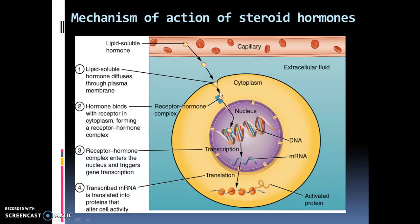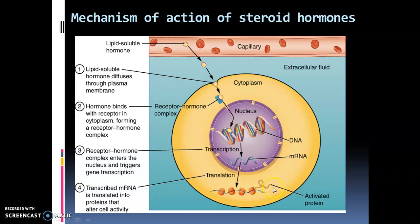To summarize the action of steroid hormones: steroid hormones are lipid soluble, so they diffuse through the plasma membrane and have intracellular receptors. They bind with intracellular receptors to form the hormone-receptor complex, which enters the nucleus and binds with DNA. DNA undergoes transcription to produce mRNA, which is carried to the cytoplasm where it binds with ribosomes. Translation occurs, a protein is synthesized, and this protein brings about the changes within the cell.